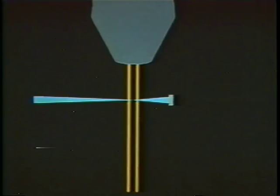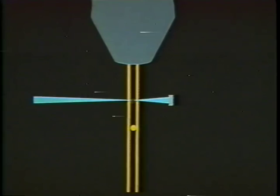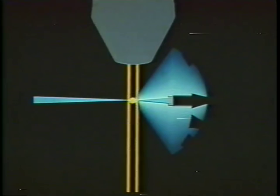In a cell sorter, cells are suspended in a liquid and forced under pressure in single file into the center of a fluid stream. The stream passes through a vibrating nozzle which causes it to break up into droplets, up to as many as 40,000 a second. Below the nozzle, and before the stream breaks up, it passes through laser light, allowing measurements to be made by sensors, particularly if cells have been tagged with fluorescent materials which shine in the laser beam.